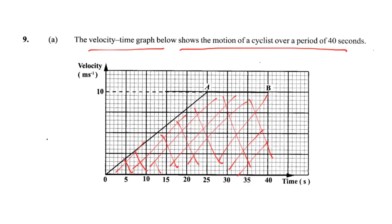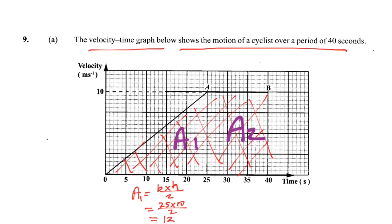So you basically just need to find the area of the triangle and the area of the rectangle — and that gives you the distance. Area 1 is the triangle. The area of a triangle is base times height over 2. Base is 25, height is 10. So 25 times 10 over 2 equals 125 meters. Remember: the area on a velocity-time graph represents distance.